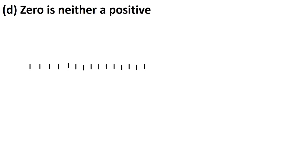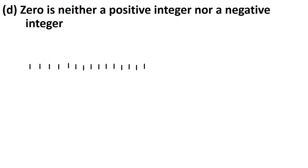Now see the next rule: 0 is neither a positive integer nor a negative integer. We will not say that 0 is a positive integer or a negative integer. It is only an integer.